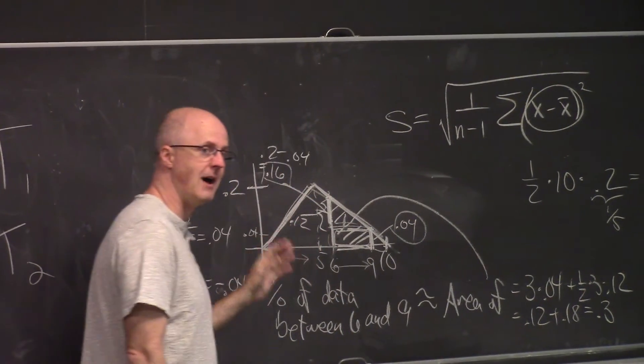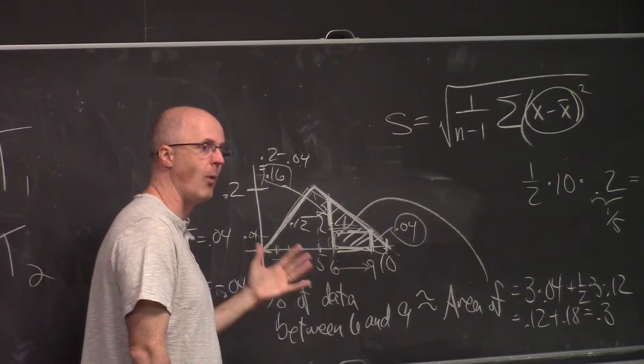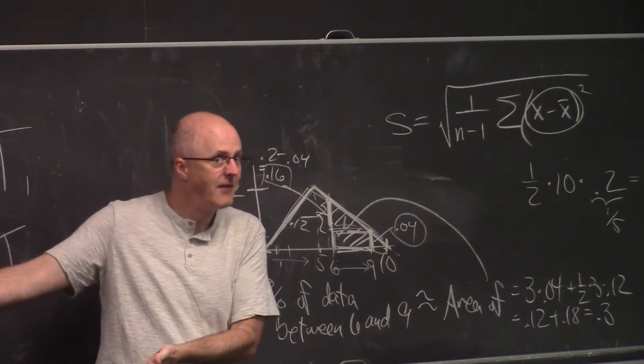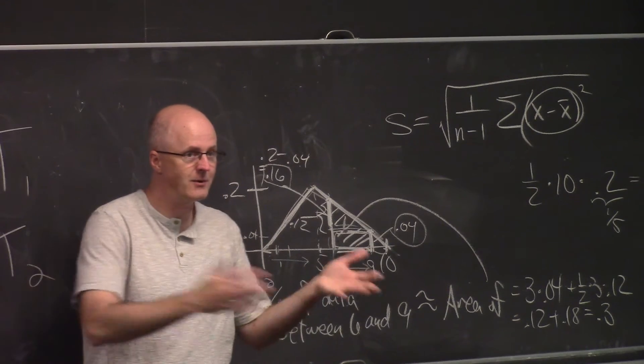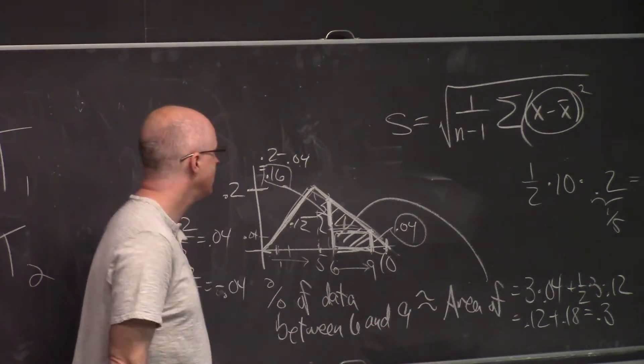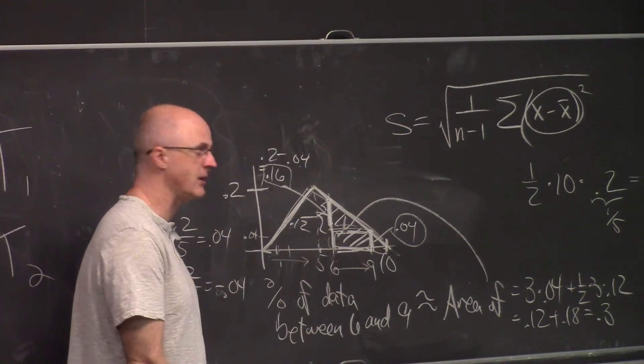When you've got a density curve that models a histogram, which you can only know by graphing the histogram, by the way, right? Make graphs before doing calculations. You only know that this is a good model if you've made a graph of a histogram.